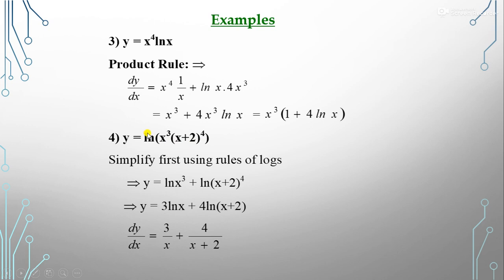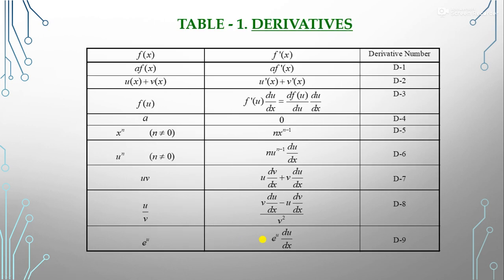Another example: y = ln(x³·(x+2)⁴). We apply logarithmic properties: ln(x³) + ln((x+2)⁴) = 3·ln(x) + 4·ln(x+2). Differentiating with respect to x: dy/dx = 3/x + 4·(1/(x+2))·1 = 3/x + 4/(x+2).